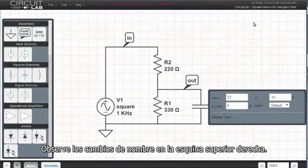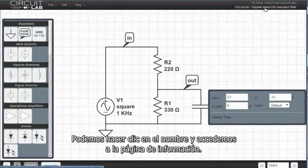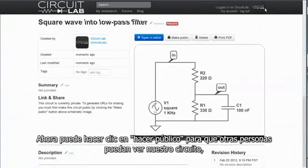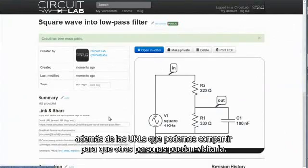Notice the name changes in the upper right hand corner. We can click on that, and it takes us out to the circuit page. Now we can click make public, so other people can look at our experiment. And now we get URLs that we can share, so other people can give it a spin.